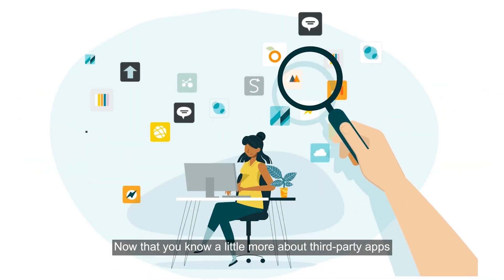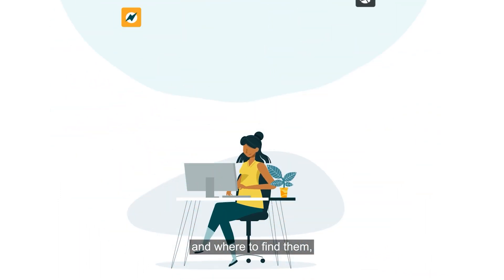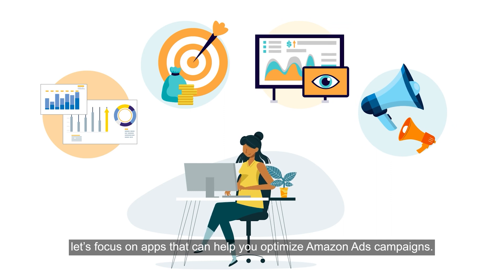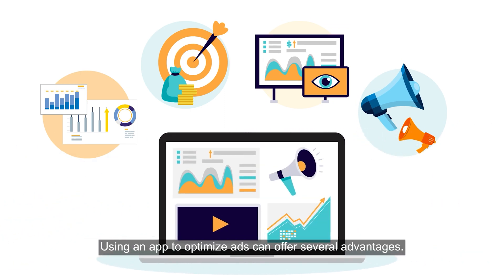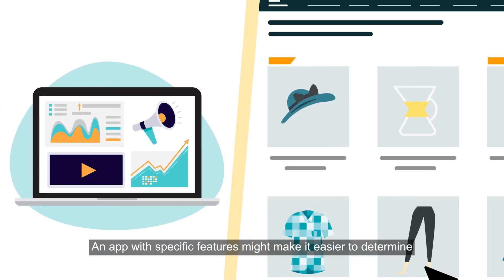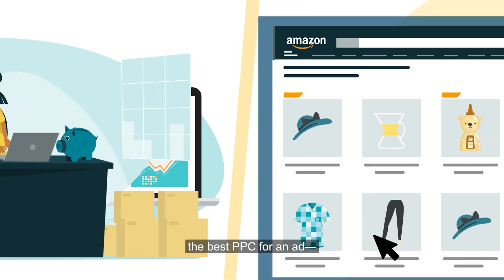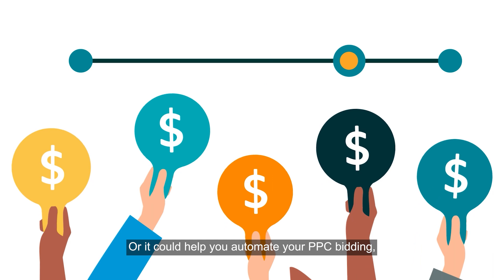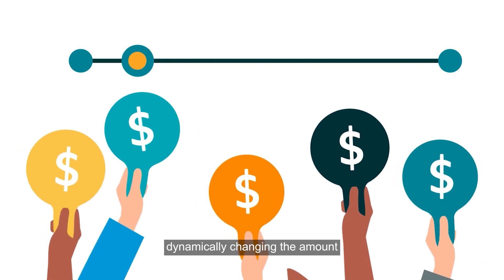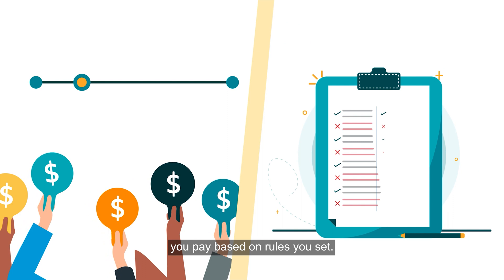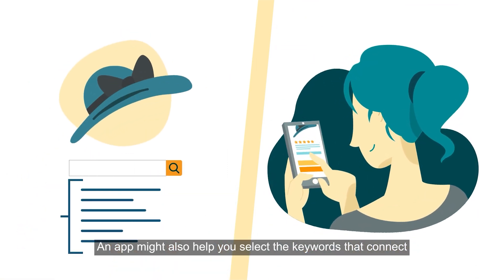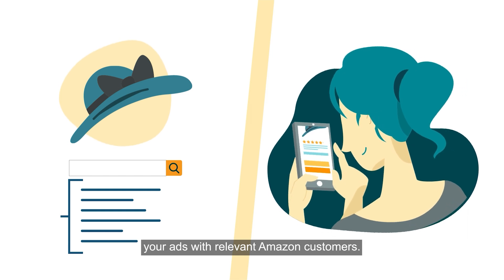Now that you know a little more about third-party apps and where to find them, let's focus on apps that can help you optimize Amazon ads campaigns. Using an app to optimize ads can offer several advantages. An app with specific features might make it easier to determine the best PPC for an ad — that's the amount you pay per click. Or it could help you automate your PPC bidding, dynamically changing the amount you pay based on rules you set. An app might also help you select the keywords that connect your ads with relevant Amazon customers.